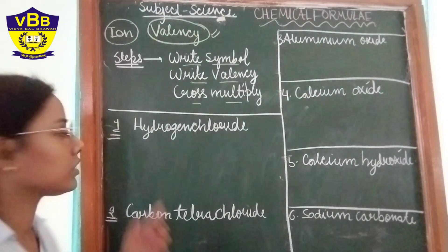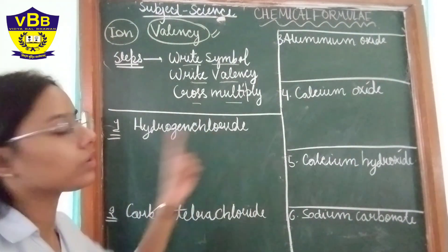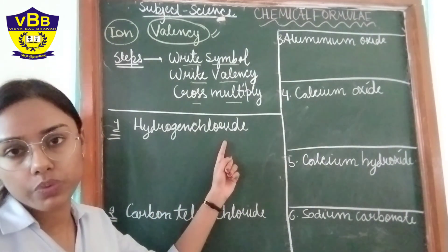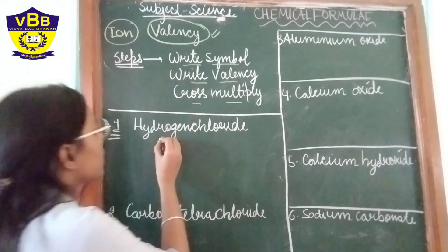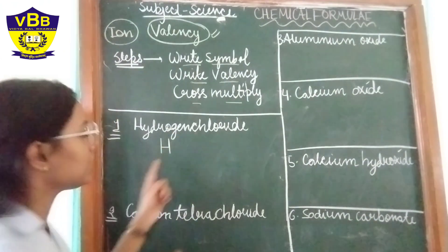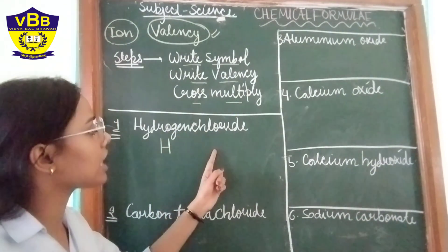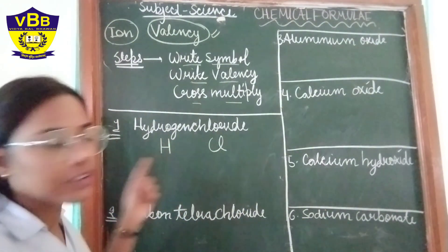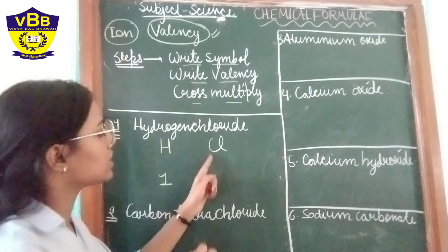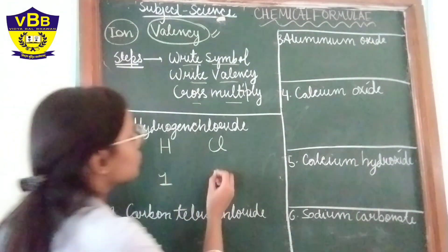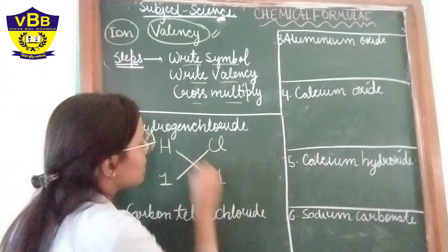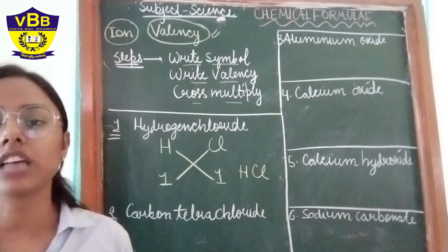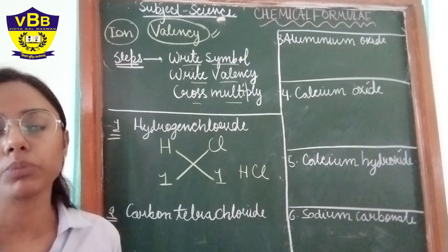Hydrogen chloride. What are the two elements here? One is hydrogen and another is chlorine. The chemical symbol of hydrogen is H and chlorine is Cl. The valency of hydrogen is 1 and the valency of chlorine is also 1. If I cross multiply these, I will get HCl. So this is how we write the chemical formula.